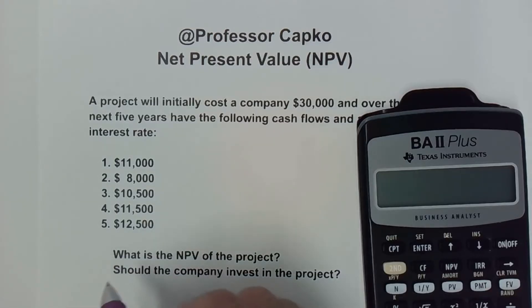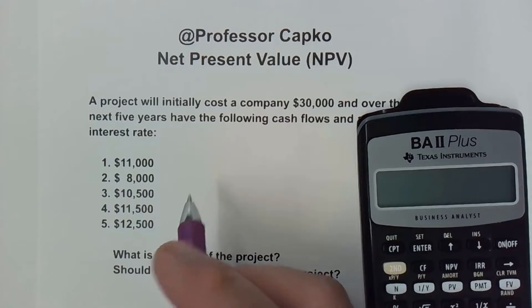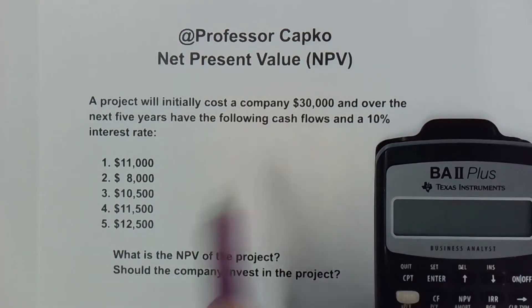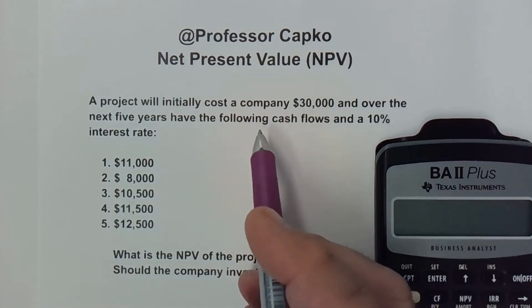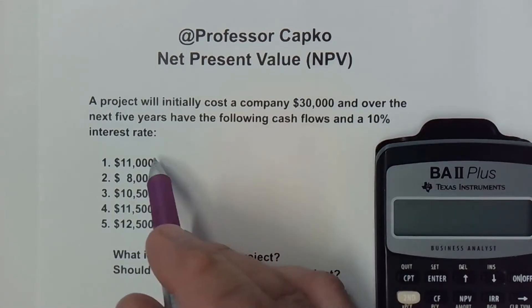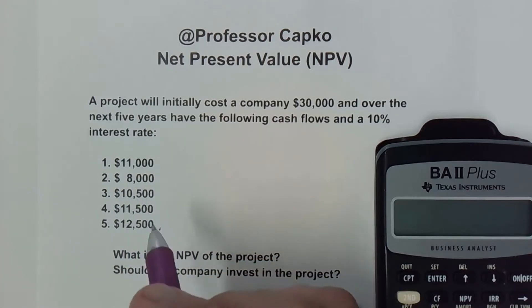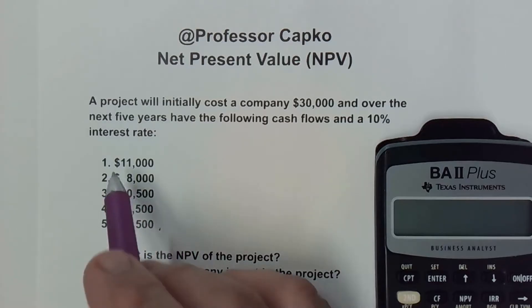Basically the net present value is comparing the cost of the project, in this case $30,000, with the expected cash flows that the project is expected to generate. And in this case, over the next five years, it may be less than that, it may be more than that, but in this case we've got five years of expected cash flows and we've got the projected amounts listed here for each of the years.